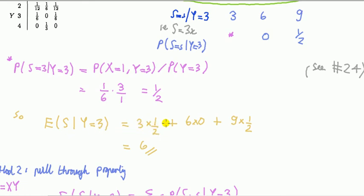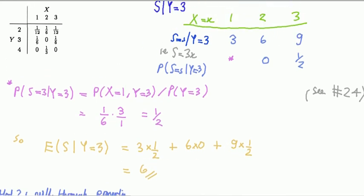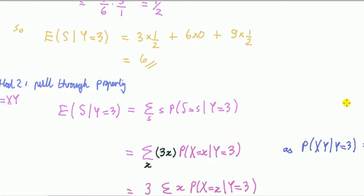Plugging into the definition: outcome three times its probability, plus six times its probability, plus nine times its probability. Since S given Y equals three takes value three with probability one-half and nine with probability one-half, the expected value works out to six. That's Method 1 using the standard definition of conditional expectation.